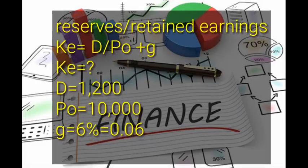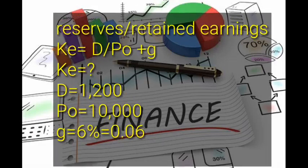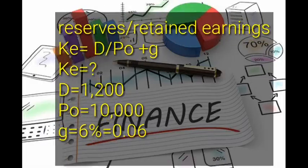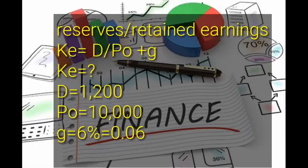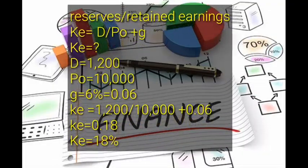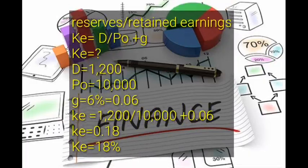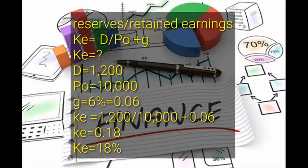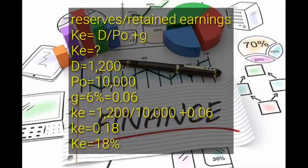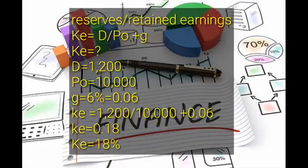From our question, D is 1,200, P₀ is 10,000, and the growth rate is 6 percent (0.06). Substituting into the formula: 1,200 divided by 10,000 plus 0.06. The cost of reserves or retained earnings is 0.18 — multiplied by 100, that is 18 percent. Those were the specific costs for all sources of funds.